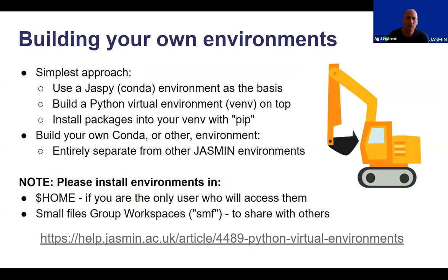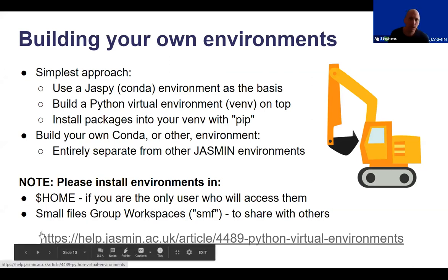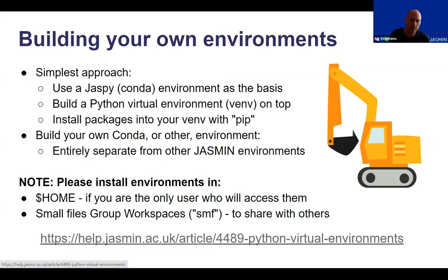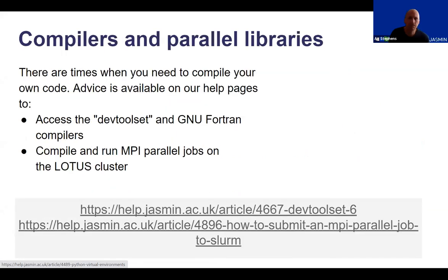You might need to build your own environments as well. The simplest approach is to build on top of the Jaspy environments using Python's virtualenv and installing with pip. You can also bypass Jaspy completely and build your own Conda environments if you need to. It's important to think about where you're installing your environments — your home directory is appropriate for small files, but if you need to share environments with other users, think about using a small files group workspace. We also have help pages covering compilers and parallel libraries, including the dev tool set and GNU Fortran compilers, allowing you to compile for MPI parallel jobs on the Lotus cluster.